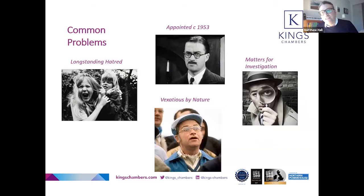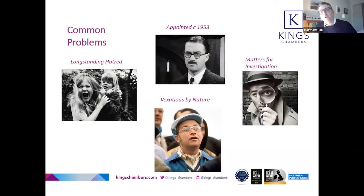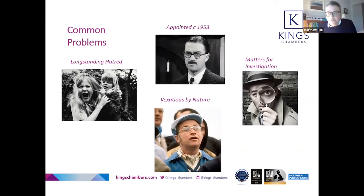Another case where there might be a deadlock is what I've called the 'appointed in circa 1953' type of case — where a personal representative, possibly the old family solicitor, was appointed many years ago, is no longer up to the task, and doesn't want to let go, whether out of pride or because they feel they're letting the testator down, possibly because they're charging fees. Then there are the vexatious litigant type cases, where somebody simply cannot abide not being the one in control.